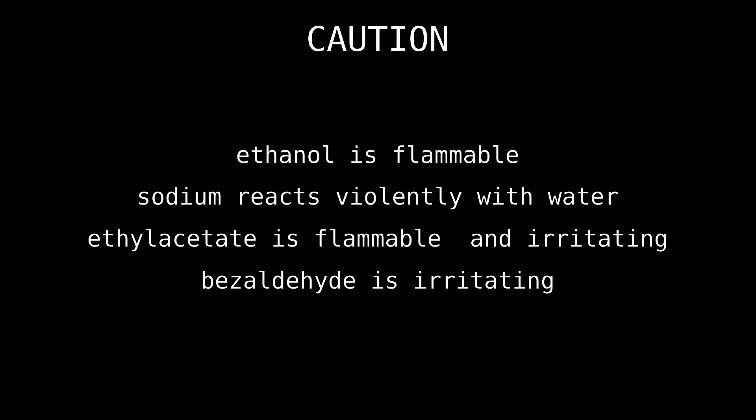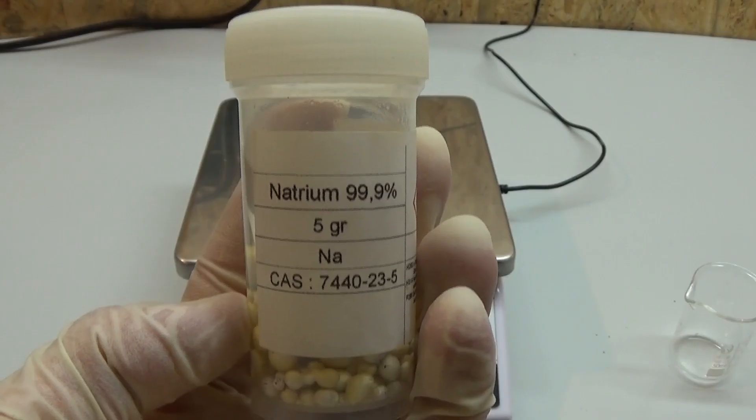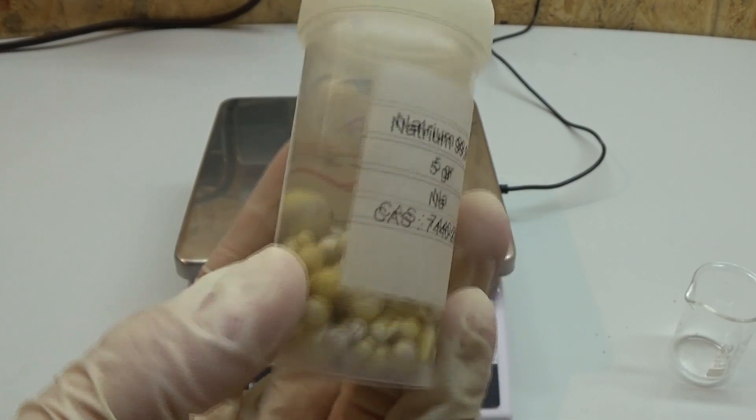Hello you all. In this video we will do the first step of two in the synthesis of trans-cinnamic acid. This will be done via the Claisen condensation using sodium ethanolate as catalyst.